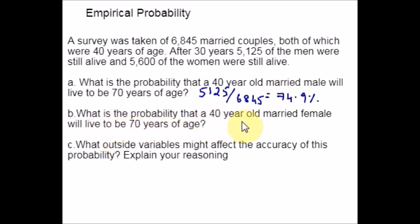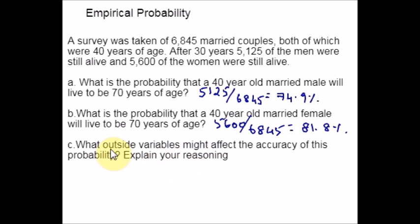For Part B — the probability that a 40-year-old married female will live to be 70 — the total number of women still alive after 30 years is 5600, and the total married couples initially were 6845, so there were 6845 females. Therefore: 5600 divided by 6845 equals approximately 81.8%. For Part C — what outside variables might affect the accuracy — since this is a real-life example, factors such as initial health, employment, and divorce rates could all affect the accuracy of the probability.